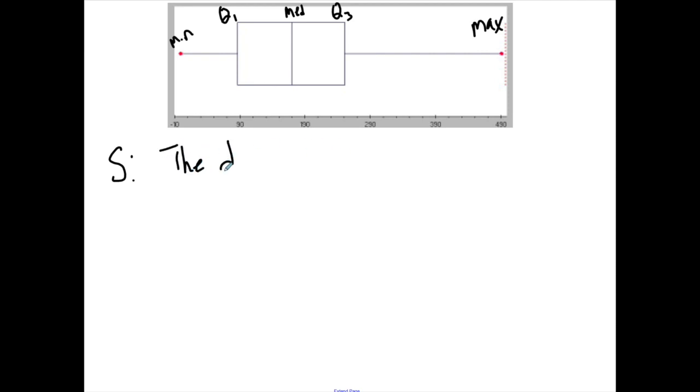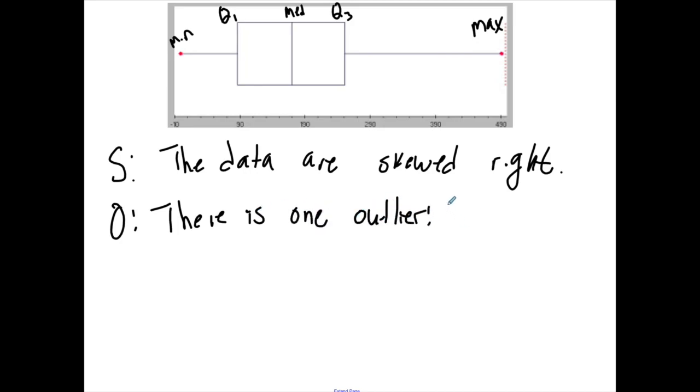Okay, so here the data are skewed to the right. Outliers - I'm going to argue that there is an outlier that we can definitely identify. There's an outlier of 490. Now we don't know that it's an outlier, so I'm going to put in a question mark. Something you might want to keep in mind is that some box and whisker plots actually will end and there'll be a hollow dot out on the right or maybe out on the left.